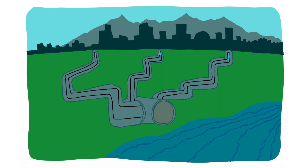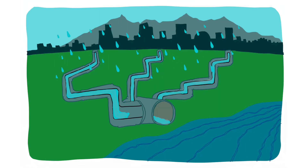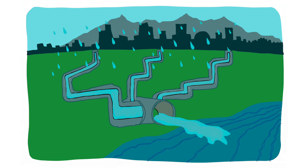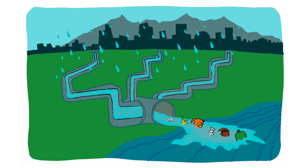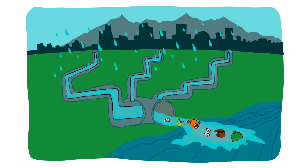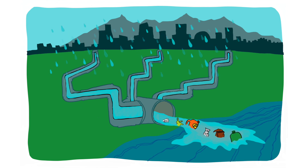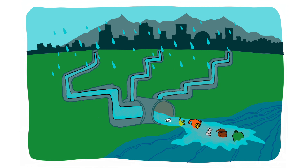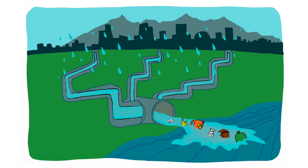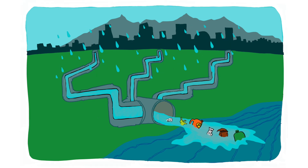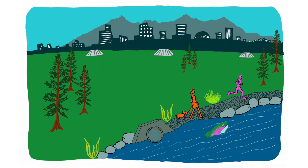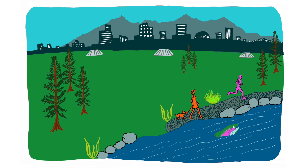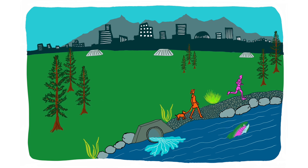A common misperception about stormwater is that it is treated and cleaned up just like your wastewater is before it enters a river. That is false. The stormwater collected through stormwater drains and pipes in the streets flows directly into creeks, streams, rivers and lakes without treatment. A properly functioning stormwater system can help prevent flooding and minimize pollution from entering our local waters.